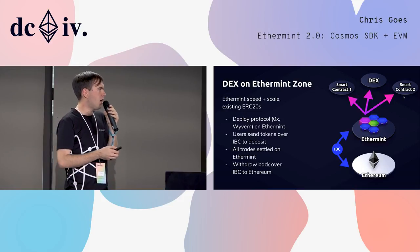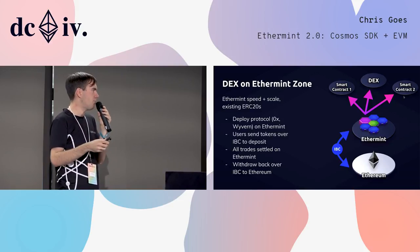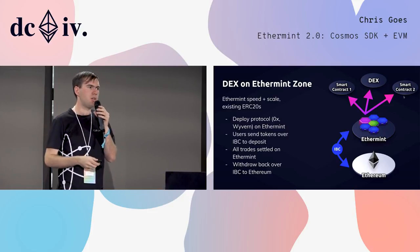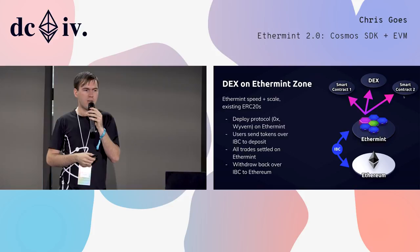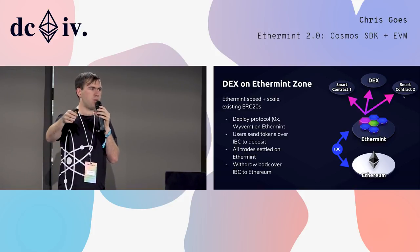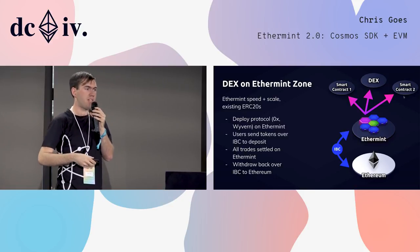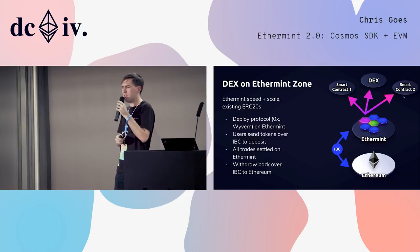A particular example would be porting a DEX — a decentralized exchange protocol like 0x or Wyvern — to an Ethermint zone. You could copy the protocol contracts onto Ethermint, deploy them to the EVM module, get them running, then allow users to deposit tokens over the IBC bridge — or even non-fungibles — from Ethereum to Ethermint. Once deposited to Ethermint, they can be used and traded in this DEX and kept there indefinitely. And if users want the option to withdraw back to the Ethereum mainchain, they can do so with no permission on your part.